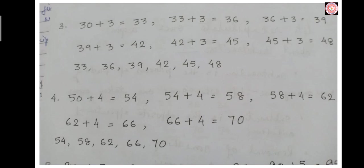To count by fours, you add four to get the next number. 50 plus 4 equals 54, 54 plus 4 equals 58, 58 plus 4 equals 62, 62 plus 4 equals 66, 66 plus 4 equals 70.